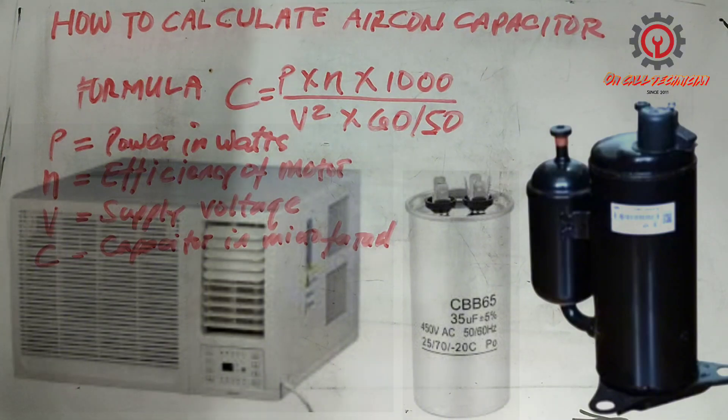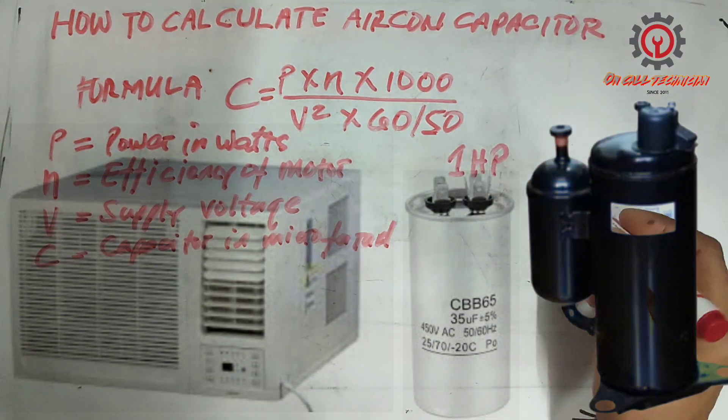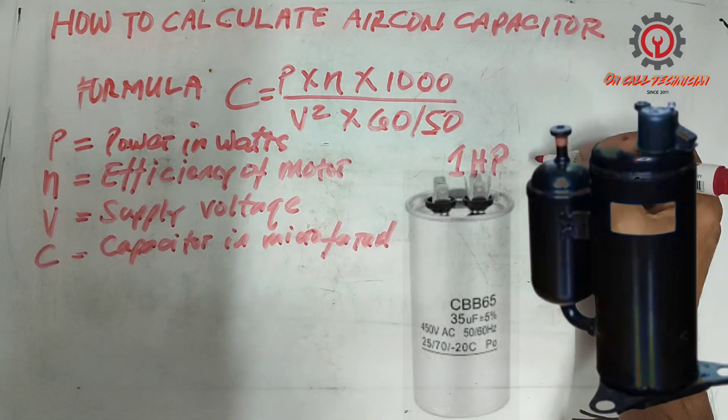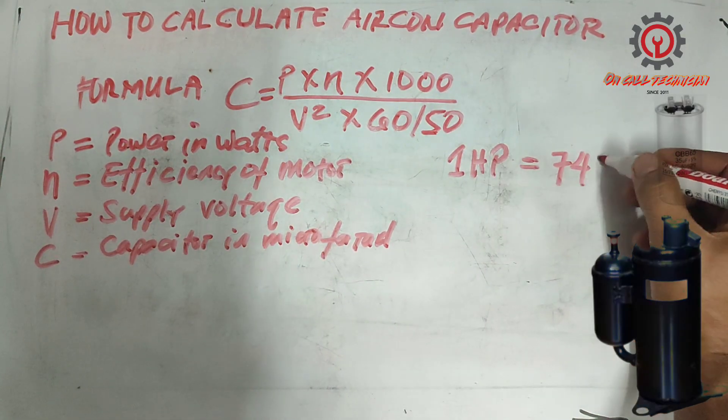Now we're going to compute the capacitor for one horsepower. One horsepower is equivalent to 746 watts.